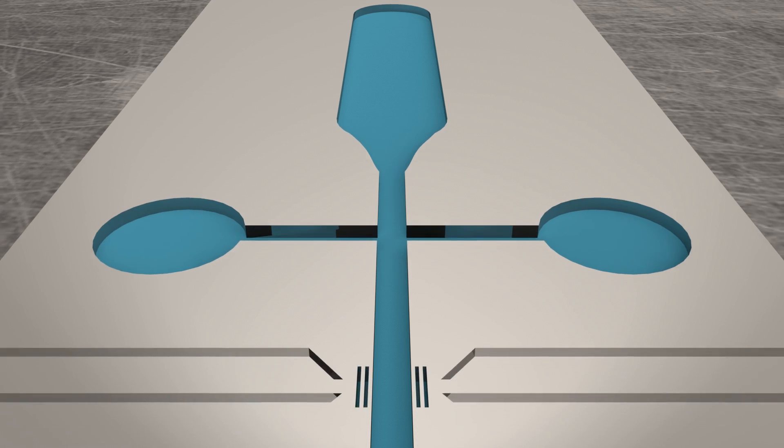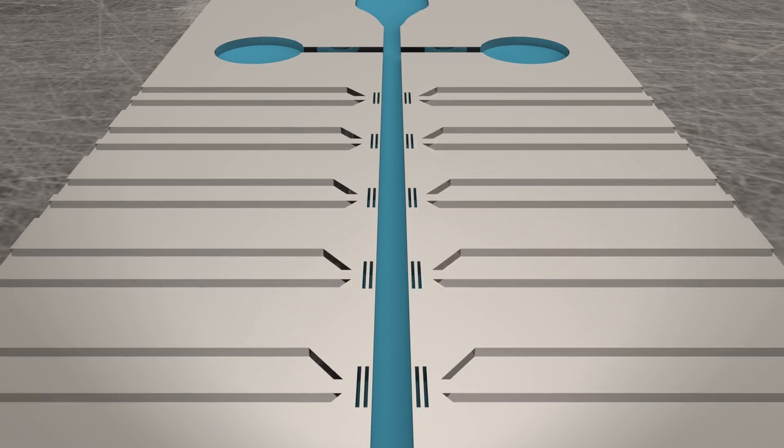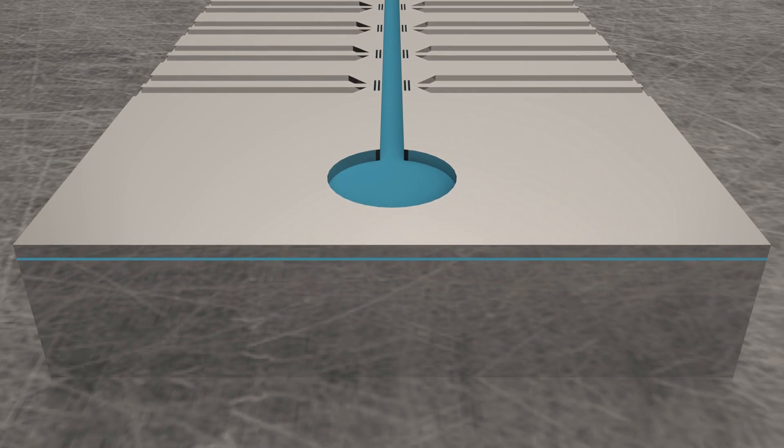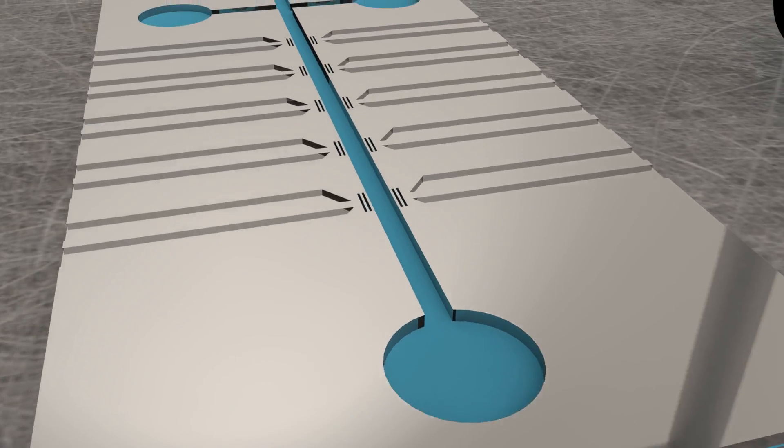To give an idea of the scale, the small bars on each side of the channel are one micron thick. That is about one hundredth the size of a human hair.